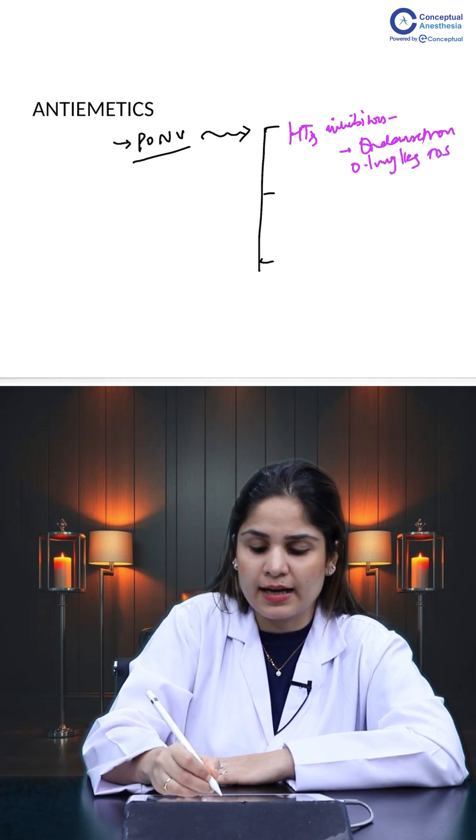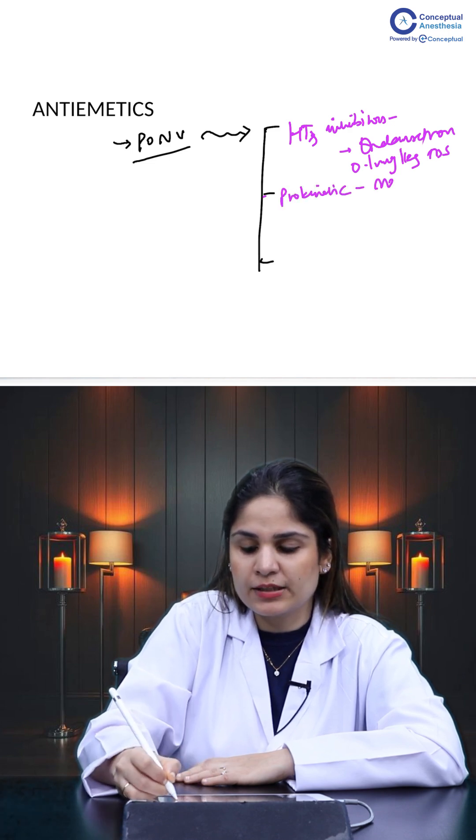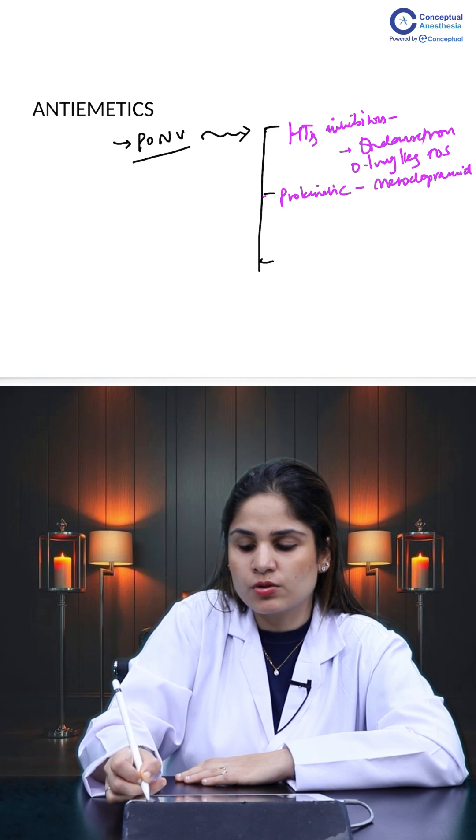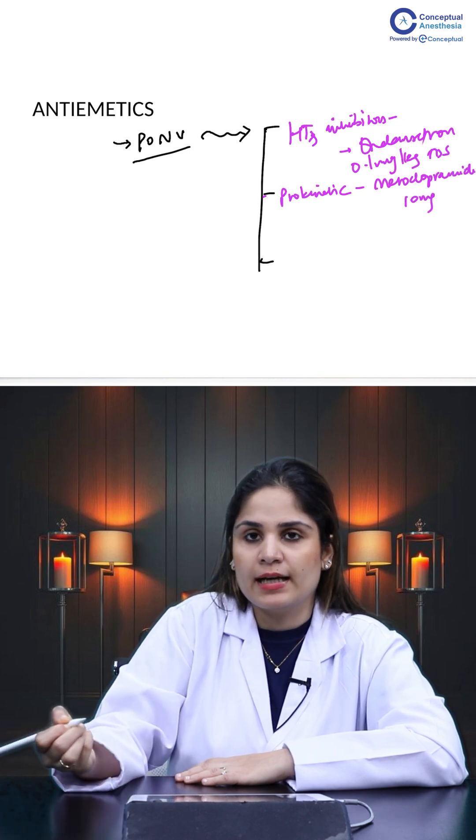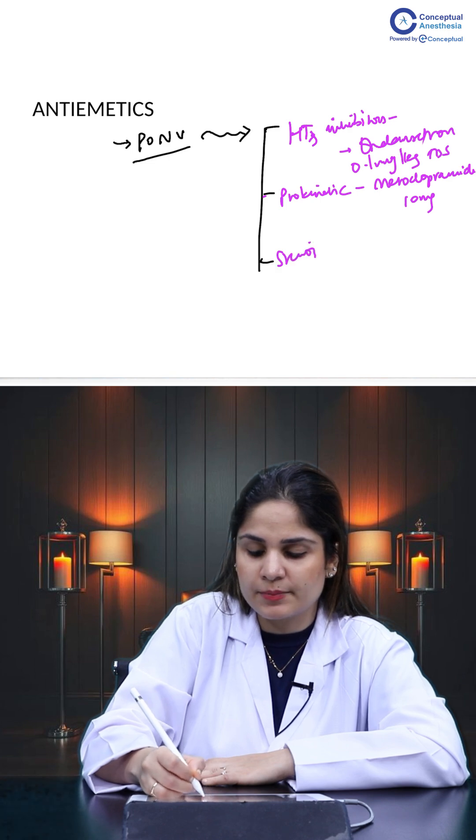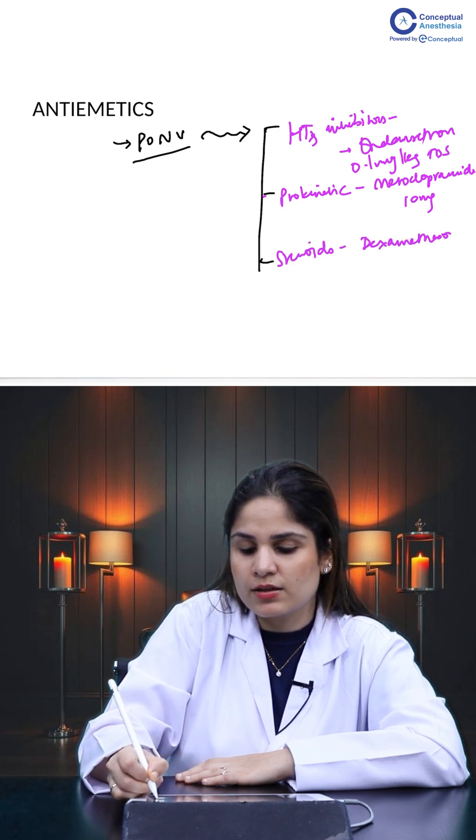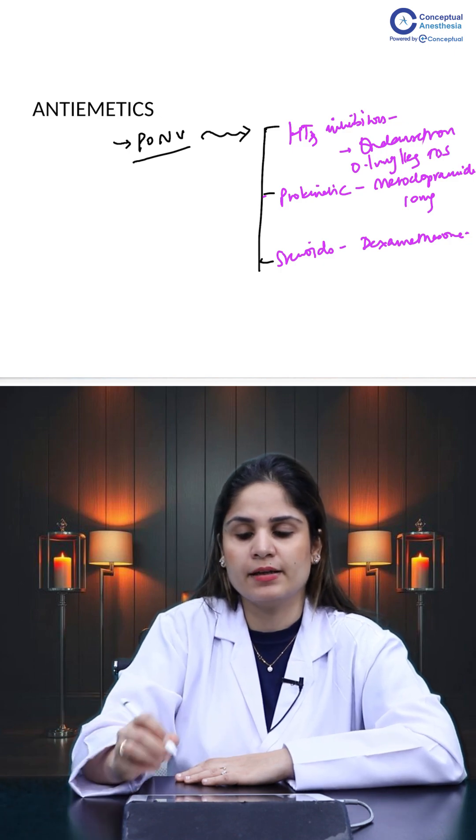Next drug that we have is a prokinetic agent like metoclopramide. In an adult patient, we give a dose of 10 mg and the third drug that we have is steroids like dexamethasone which also act anti-emetic in nature. So, these are all our options for anti-emetic agents.